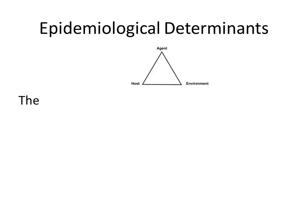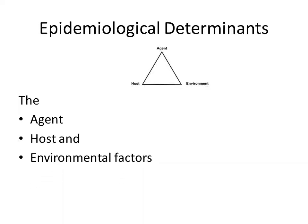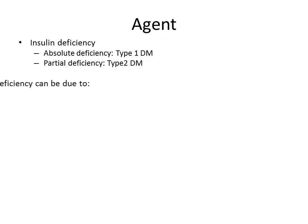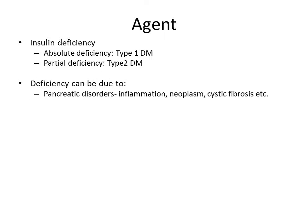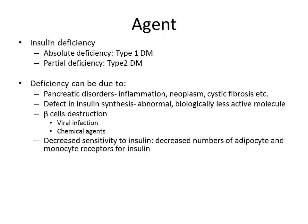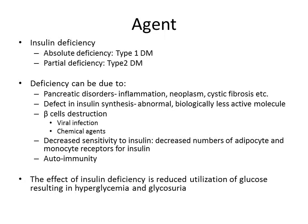The epidemiology of diabetes mellitus is discussed in terms of agent, host, and environmental factors. The agent — the underlying cause — is insulin deficiency, which is absolute in type 1 and partial or relative in type 2. This deficiency can be due to pancreatic disease, defective insulin synthesis, destruction of beta cells by viral infections or chemical agents, decreased sensitivity to insulin (fewer receptors), or autoimmunity to insulin or beta cells. The net effect is reduced utilization of glucose, resulting in hyperglycemia and glycosuria.